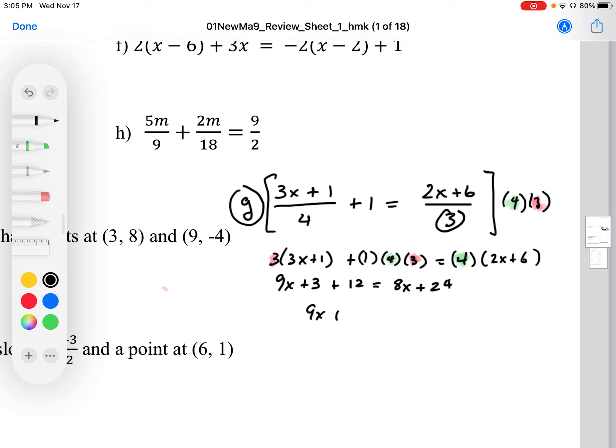Combine like terms. If I subtract 8x from both sides, I'm left with 1x, which will solve my equation. But I also have to get rid of the 15 with a minus 15 on both sides. So x on this side, these cancel out.